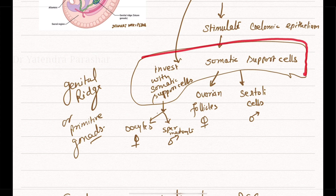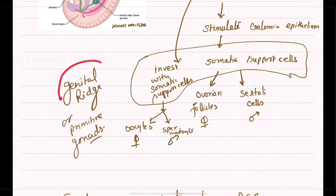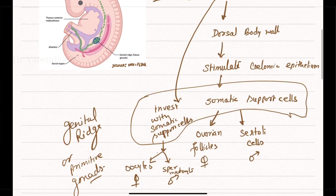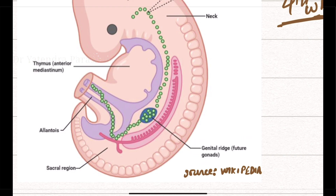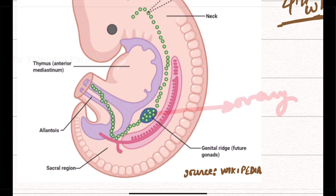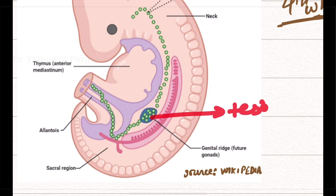These invested germ cells and somatic support cells combine to form the genital ridge of primitive gonads. From these primitive gonads, the testis in case of males and the ovary in case of females are formed.